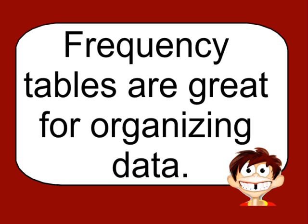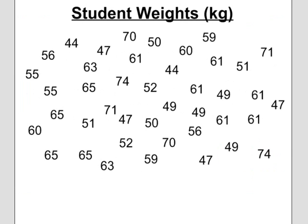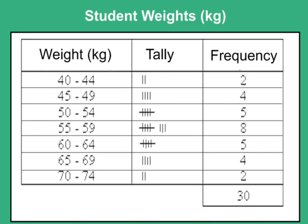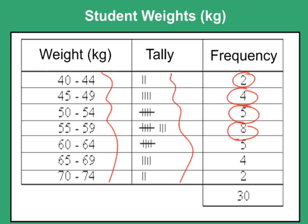Frequency tables are great for organizing data. For example, if you were analyzing the student weights in a particular class in kilograms, and this is what you came up with, it would be really hard to analyze or interpret because it's just a bunch of raw, random data. You could take that and organize it into a frequency table, putting the weights into different intervals and counting how frequently each piece of data occurred in that interval. This is where a frequency table gets its name — how frequently something falls into a particular interval.